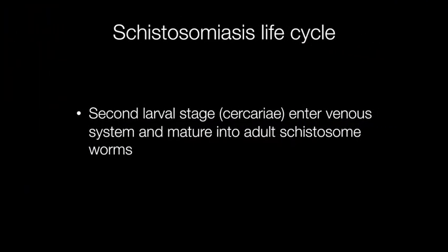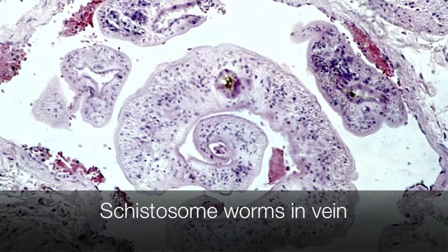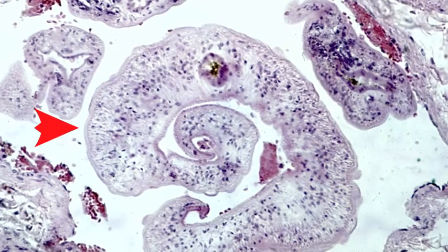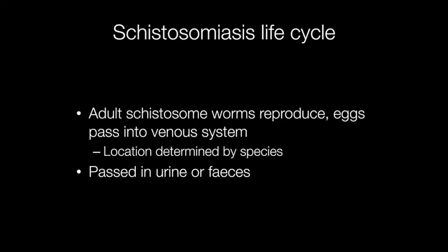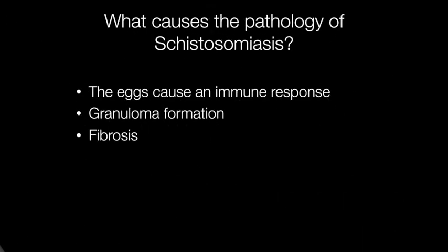After the larvae have entered the skin, they then make their way into the venous system and mature into adult Schistosome worms. Here you can see a vein containing Schistosome worms. The Schistosome worms reproduce and the females can produce 200 or more eggs per day. It is the eggs that cause the problems in Schistosomiasis because they result in an immune response causing granulomas and fibrosis.